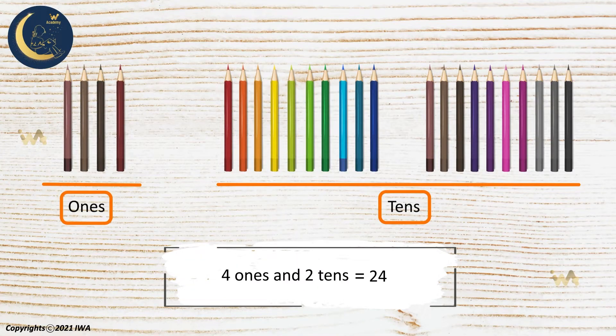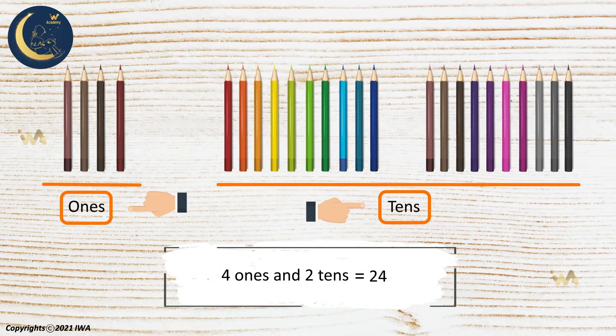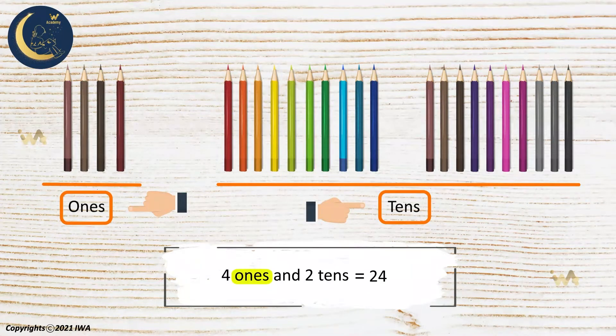Notice, my dears, that two-digit numbers are composed of two parts, ones and tens. We always write the ones and then the tens.